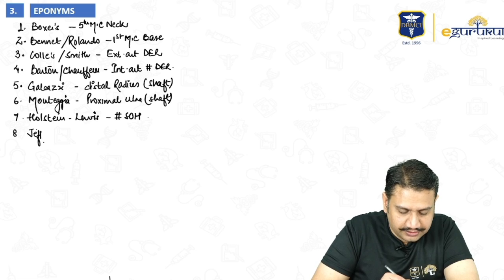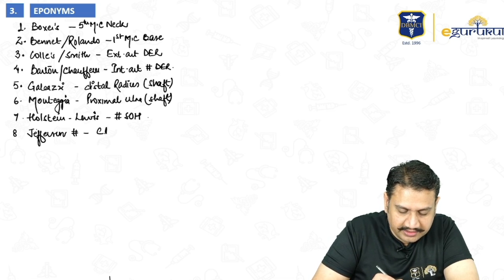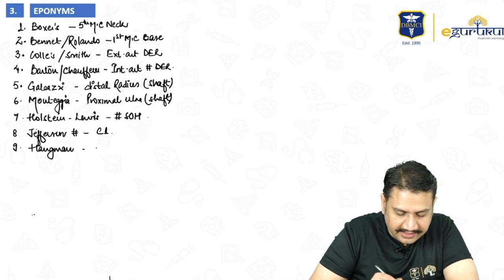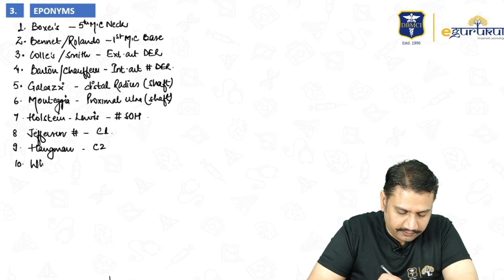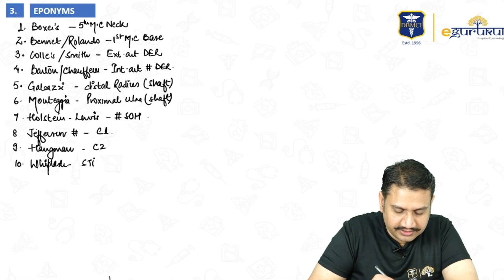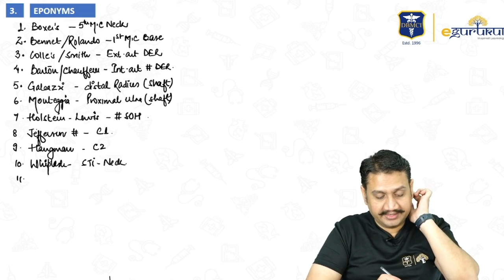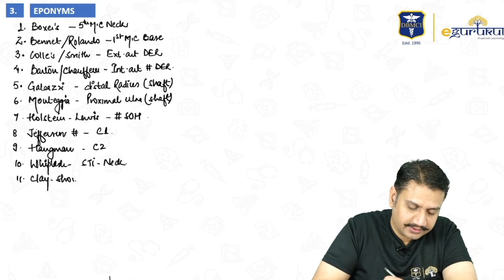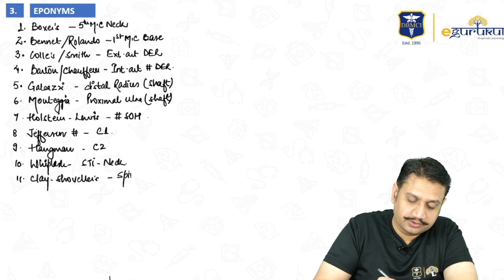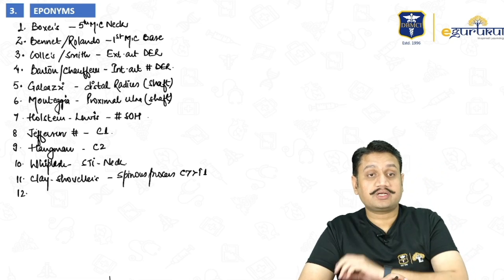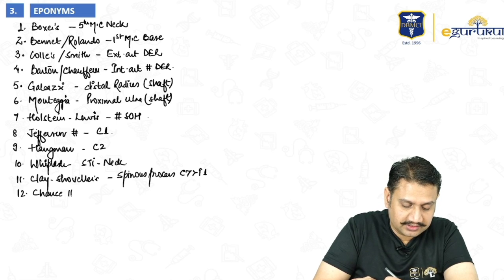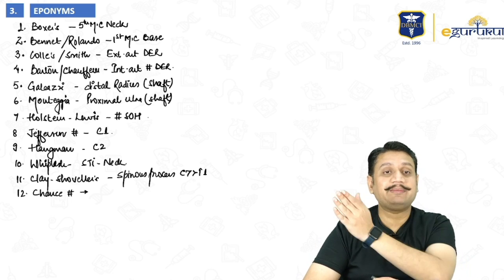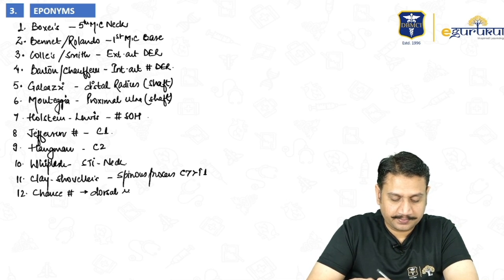In vertebral injuries: Jefferson fracture is a C1 injury. Hangman's fracture is a C2 injury. Whiplash does not involve the vertebral body — it is a soft tissue injury of the neck area, also known as sprained neck. Clay shoveler's injury is injury to the spinous process — usually C7 or T1. Chance fracture, or seat belt injury, is a compression fracture through all elements of the spine, typically seen in the dorsal region.